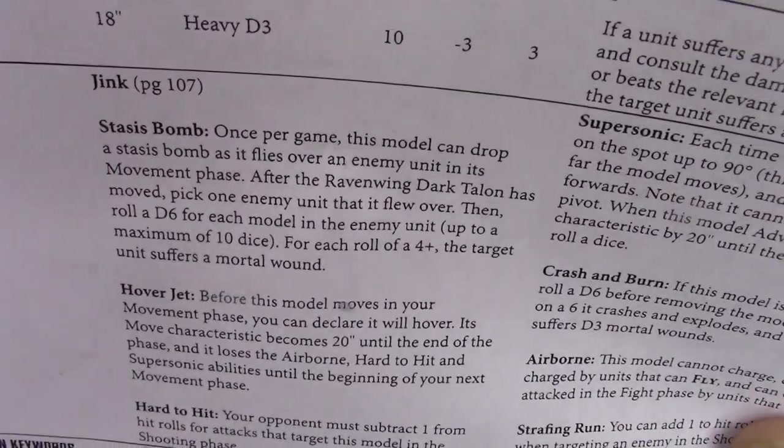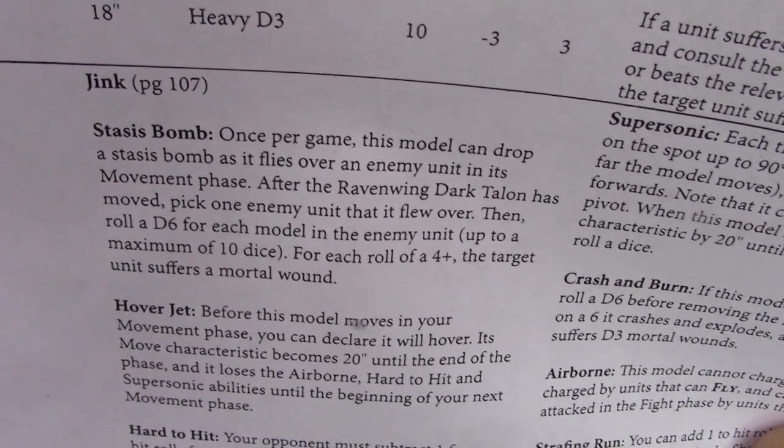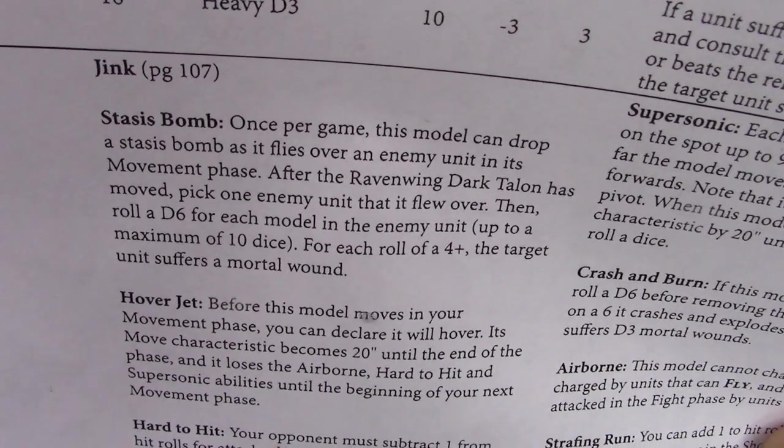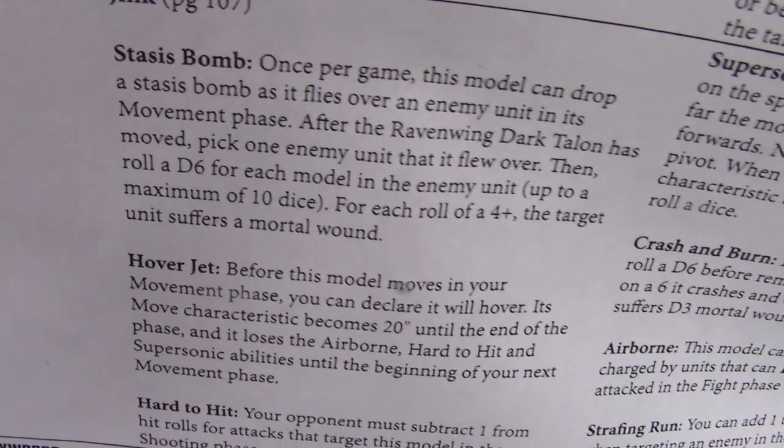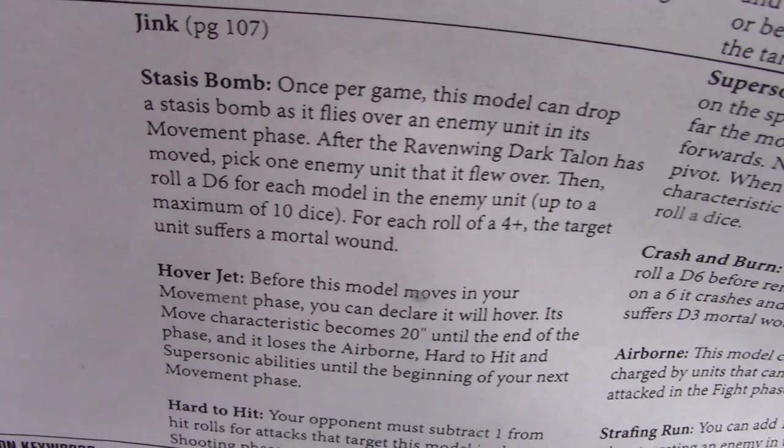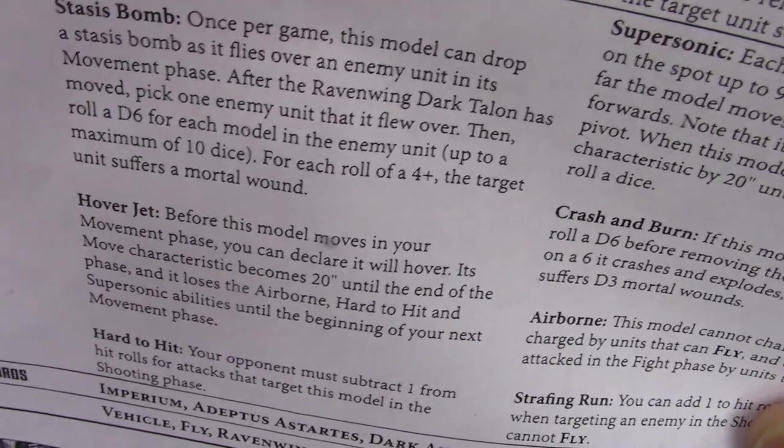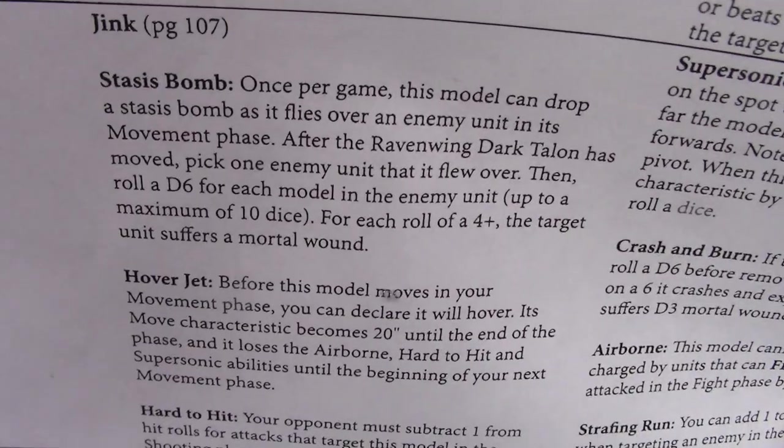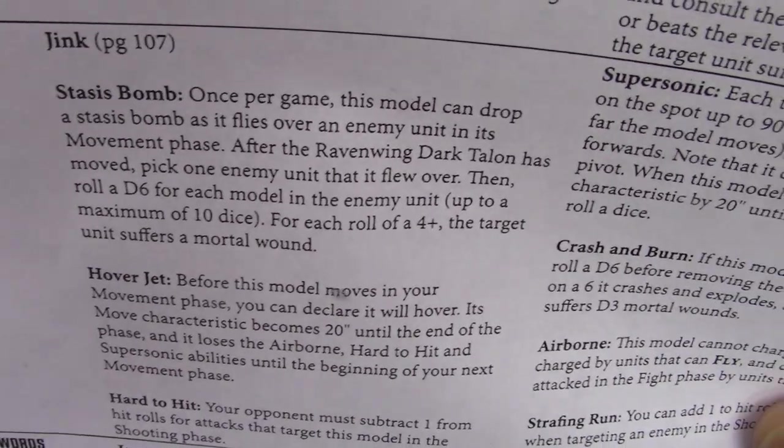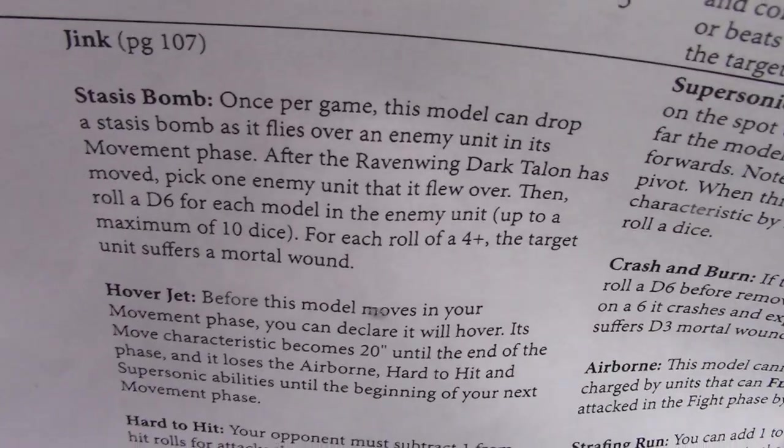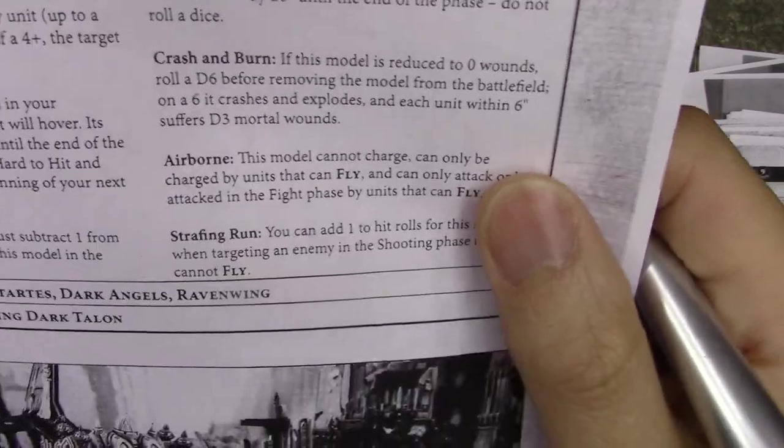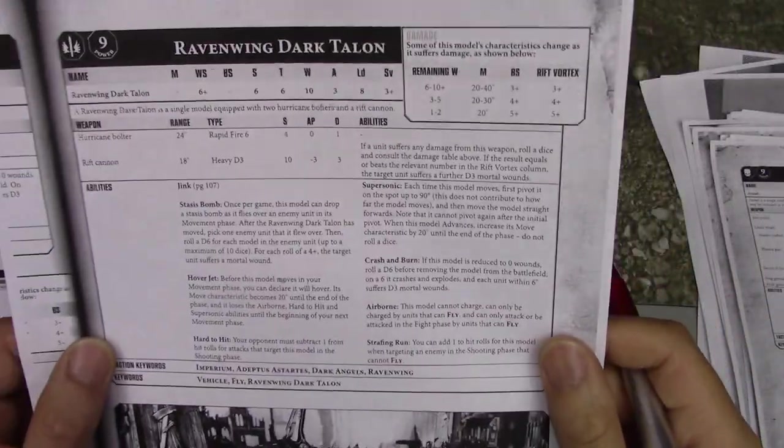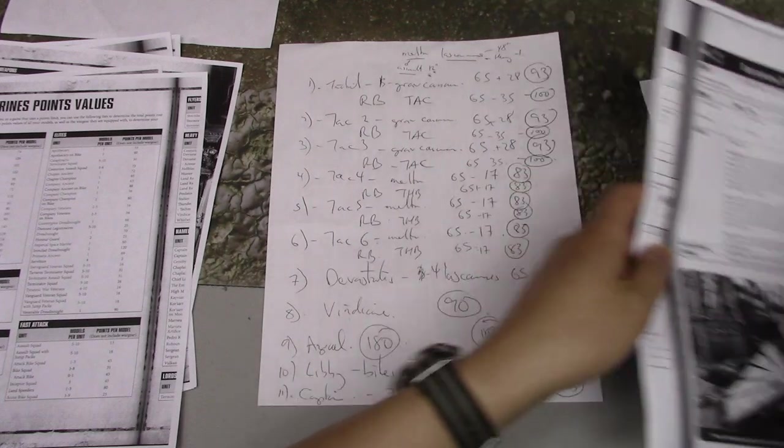It has Hurricane Bolters, which is rapid fire 6. So within 12 inches, it's going to be shooting 12 shots. And it's got 2 of them. So that's a chaff killer for sure. And then it's got the Rift Cannon - 18 inch range, Heavy D3, strength 10, minus 3 for 3 damage. And then if you do damage, which you probably will if you hit, you actually roll another dice. On this number, which gets worse as you get damaged, target unit suffers a further D3 mortal wounds. That's awesome. So that is really good. That is something that can kill characters one shot or take a lot of wounds off vehicles.